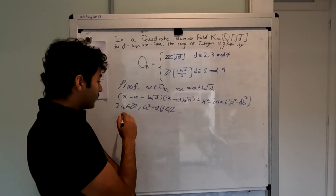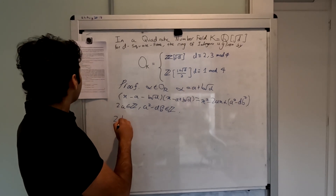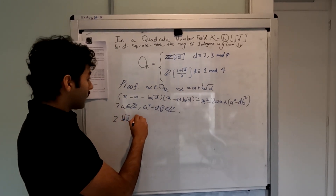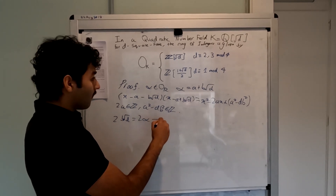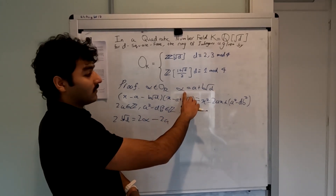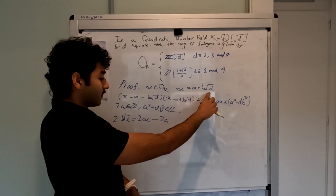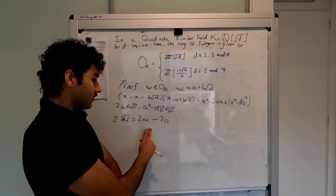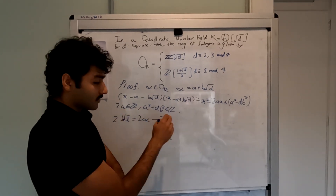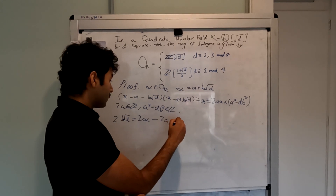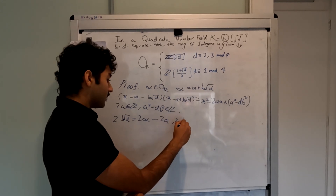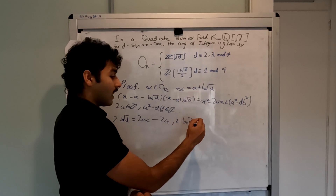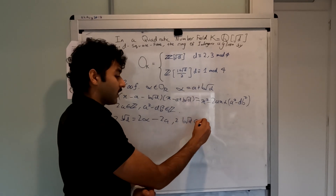Now we see that 2b√d can be expressed as 2α minus 2a, since alpha is a plus b√d. Since alpha is an algebraic integer and 2a is in the integers, we have that 2b√d is an algebraic integer.